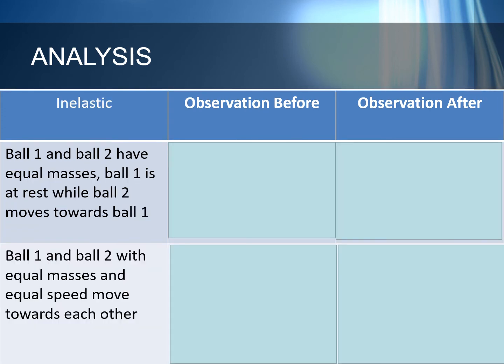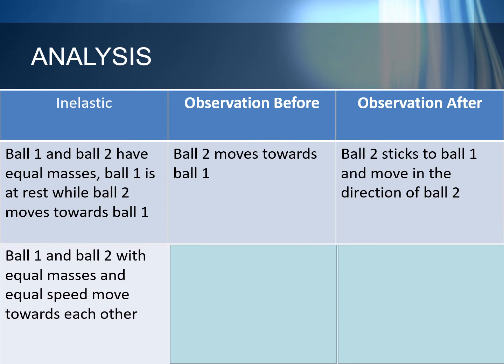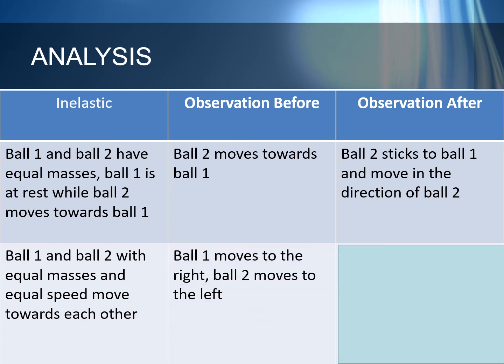For setup 4, ball 1 and ball 2 have equal masses. Ball 1 is at rest while ball 2 moves towards ball 1. Before collision, ball 2 moves towards ball 1. After collision, ball 2 sticks to ball 1 and moves in the direction of ball 2. For setup 5, ball 1 and ball 2 with equal masses and equal speed move towards each other. Ball 1 moves to the right while ball 2 moves to the left. After collision, the balls stop and stick to each other.